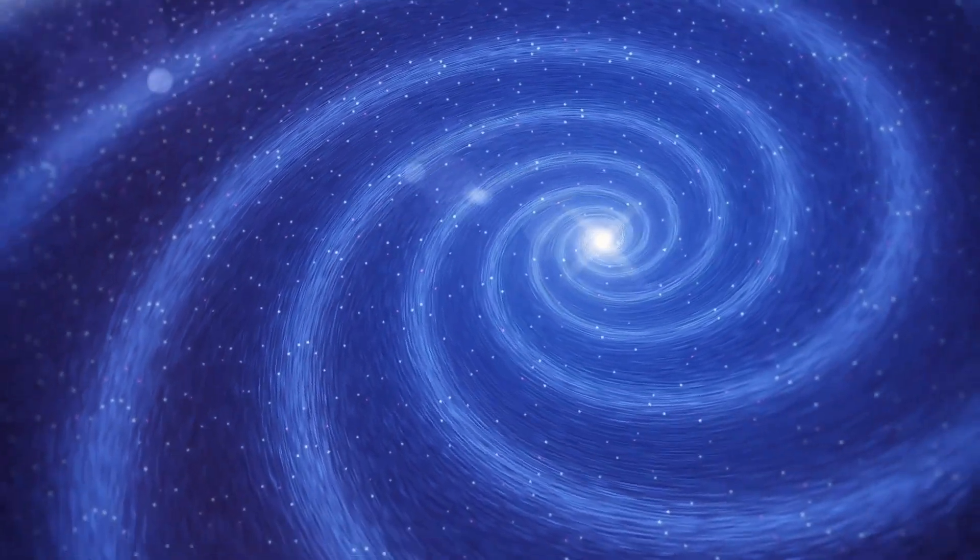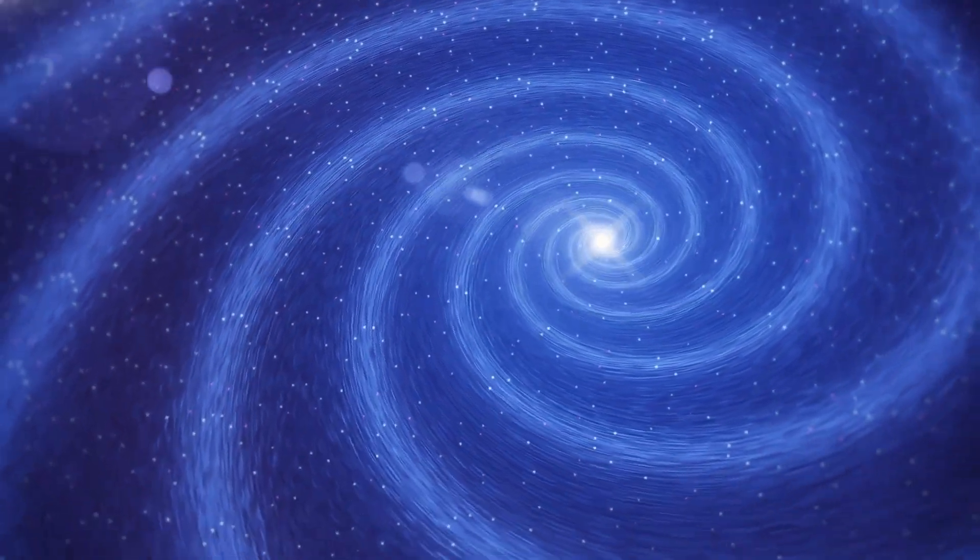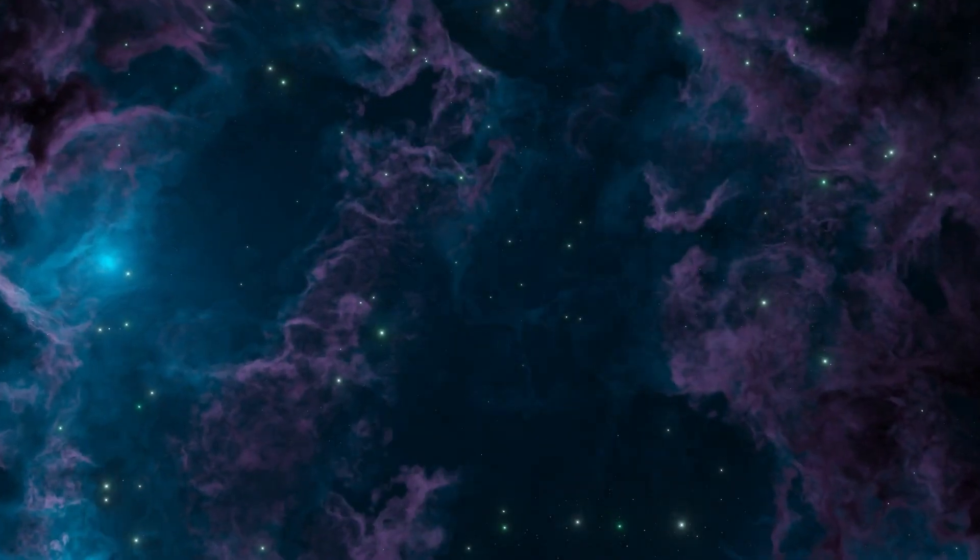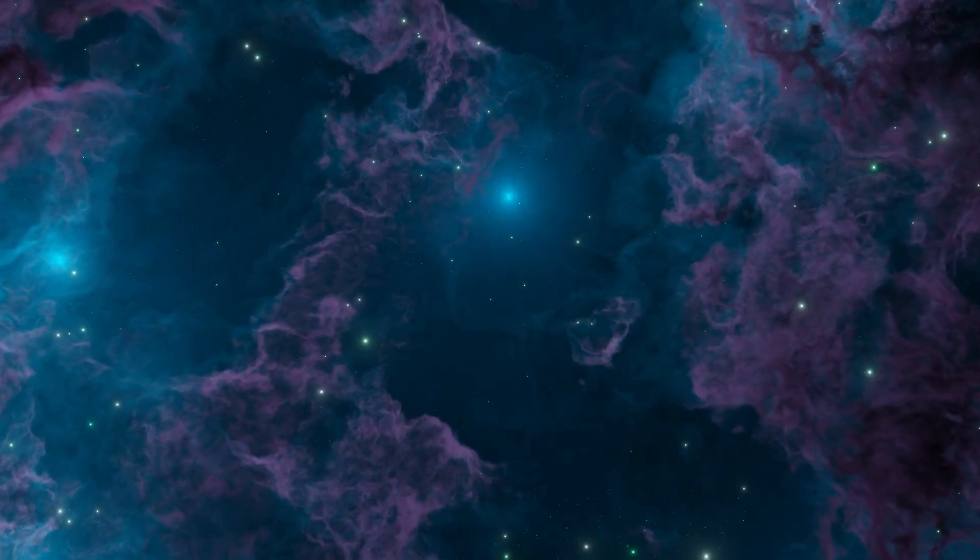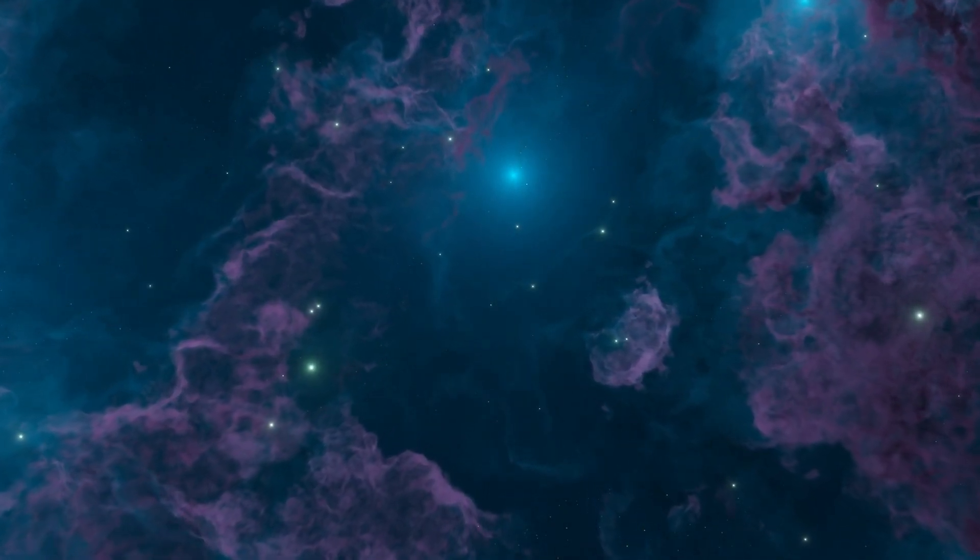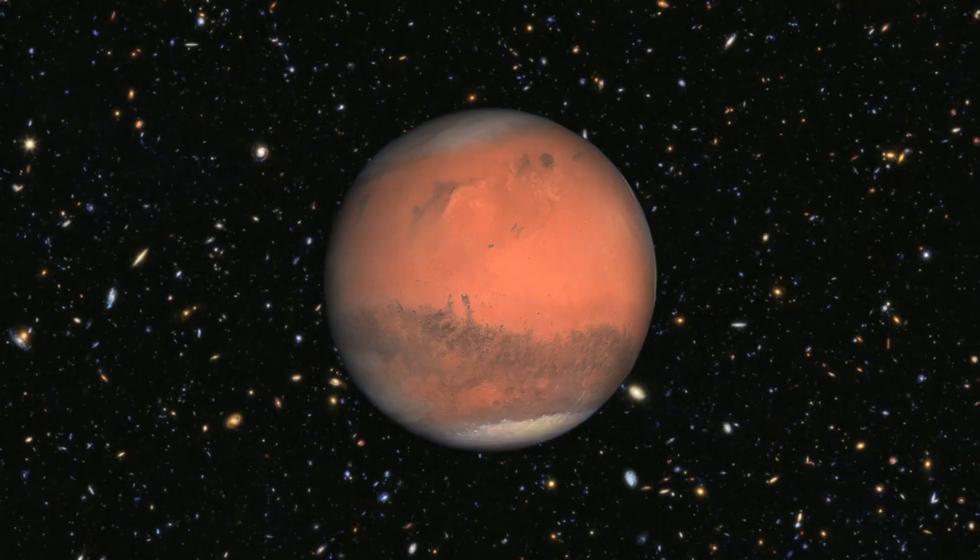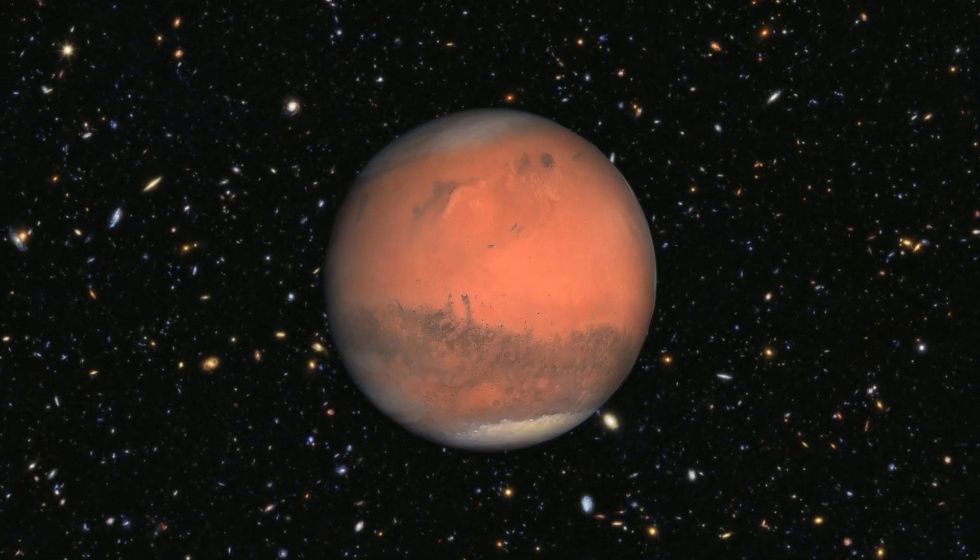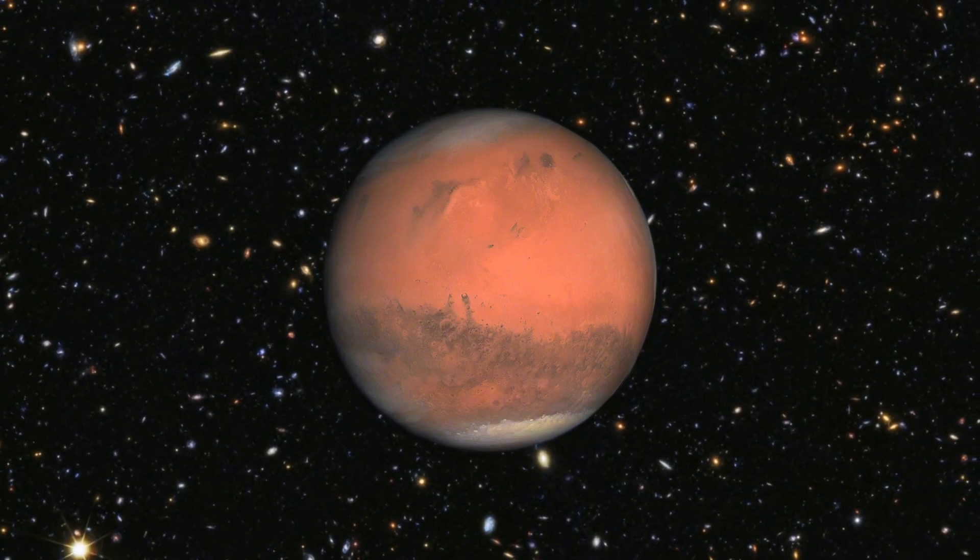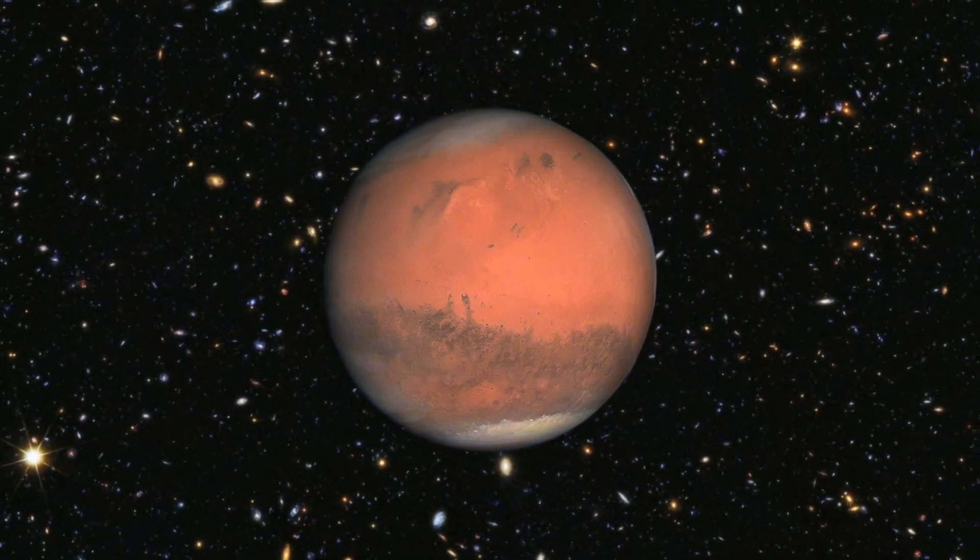Einstein's theory of general relativity has big implications for how the universe is structured. At first, he added something called a cosmological constant to his equations because he thought the universe was not changing. But when we found out it's expanding, he called this a big mistake. This idea of an expanding universe based on general relativity is a key part of the Big Bang theory, which explains how the universe began.